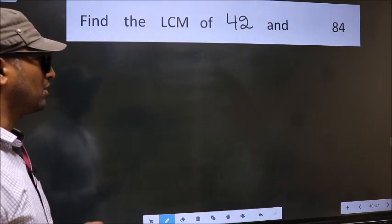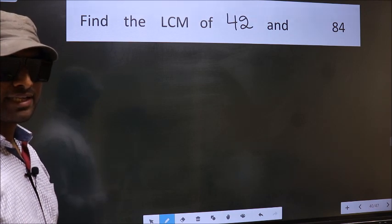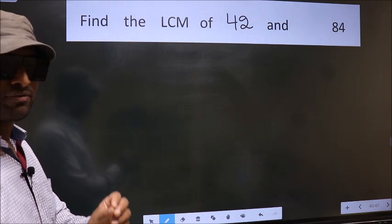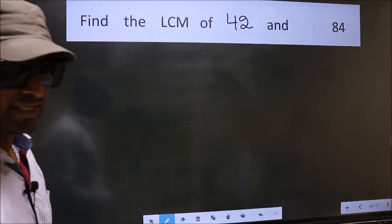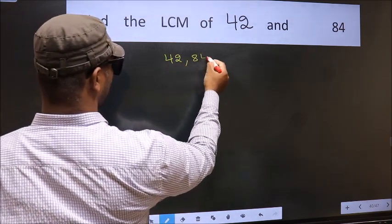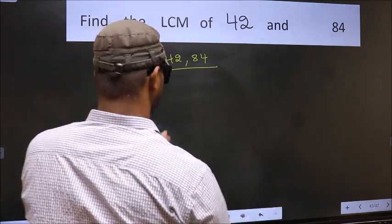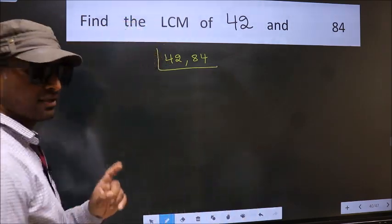Find the LCM of 42 and 84. To find the LCM, first we should frame it in this way: 42, 84. This is your step 1.